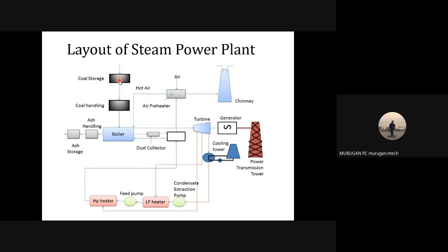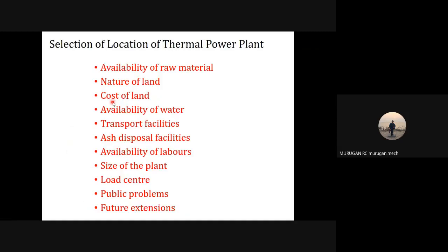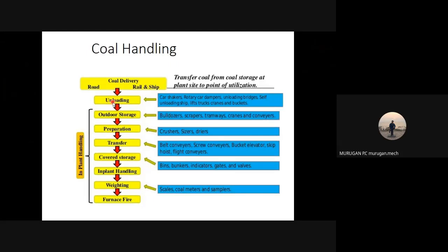Usually the coal is handled by means of belt conveyors and screw conveyors — the coal from the yard is transported to the boiler furnace by means of various coal handling equipment. The various stages of the coal handling process include coal delivered by road, rail, and ship; it is unloaded and stored in outdoor space; the coal is then prepared and transferred to the system for in-plant handling, where size reduction of coal particles takes place, followed by weighing before entering the furnace.